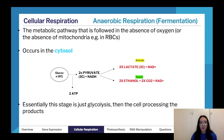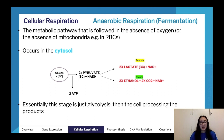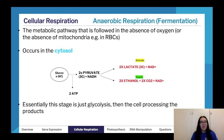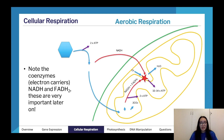The diagram shows the mitochondria with glucose being consumed and the production of NADH and FADH₂. Note that NADH and FADH₂ are coenzymes or electron carriers — they are really important later on. The first stage of both aerobic and anaerobic respiration involves one molecule of glucose (C₆H₁₂O₆) being broken into two pyruvate molecules (three carbons each). This occurs in the cytosol of the cell, does not require oxygen, and produces a net of two ATP.